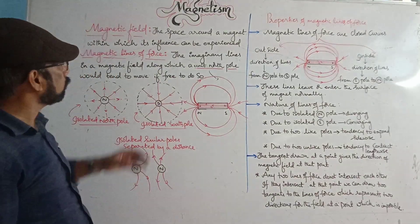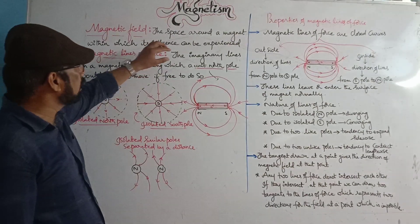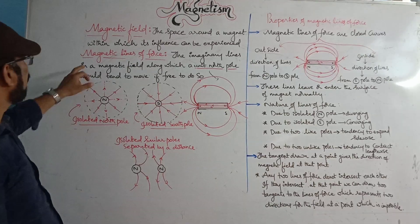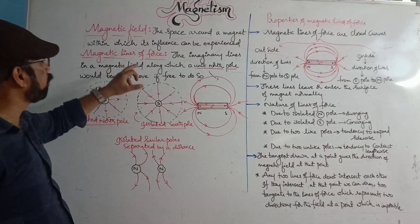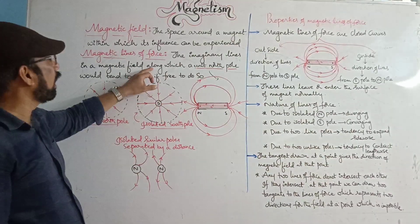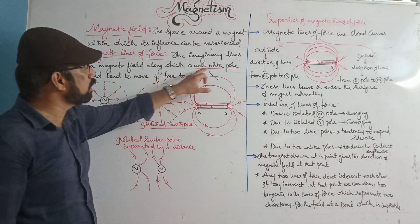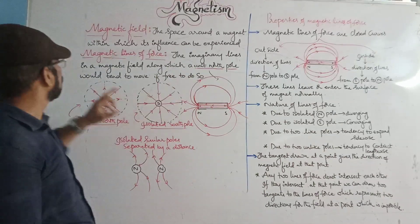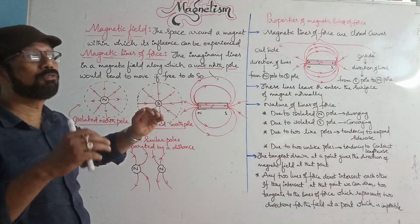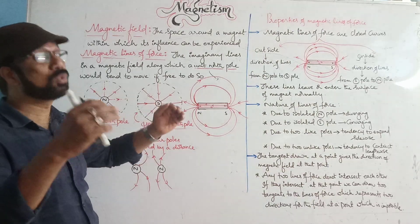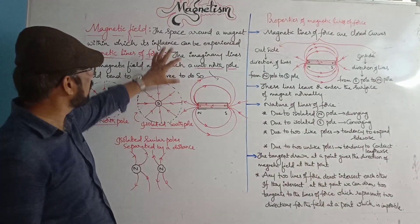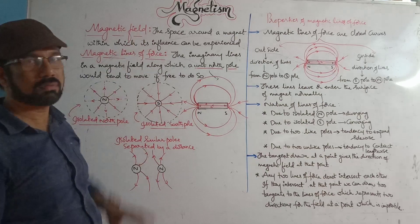The imaginary lines in a magnetic field along which a unit north pole would tend to move, if free to do so, are called magnetic lines of force. This is the definition of magnetic lines of force.